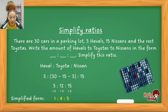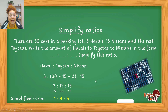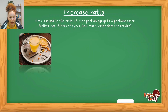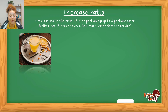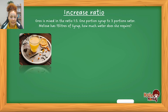Simplifying ratios is the most common type seen in final year papers. But the other question types do get asked. Now let's look at the second type — increasing a ratio — and I've included an example to explain this.